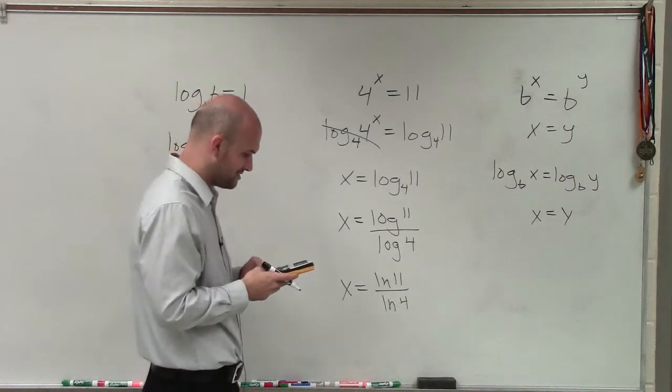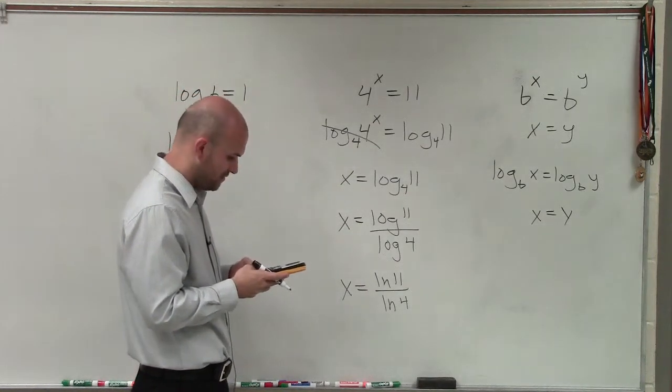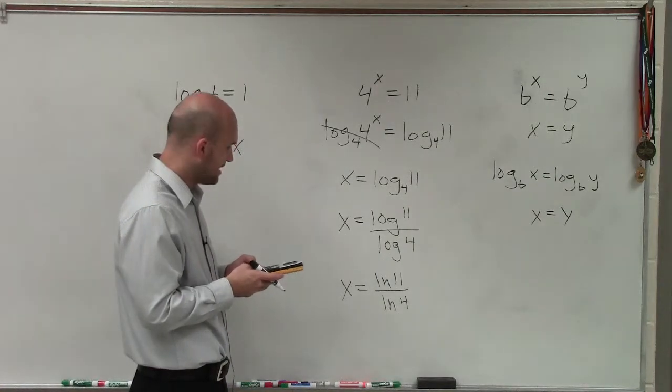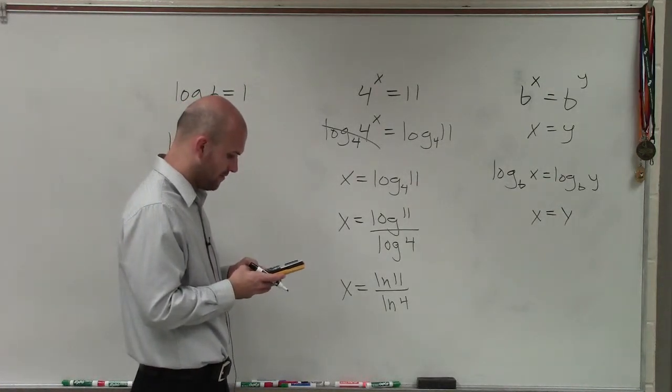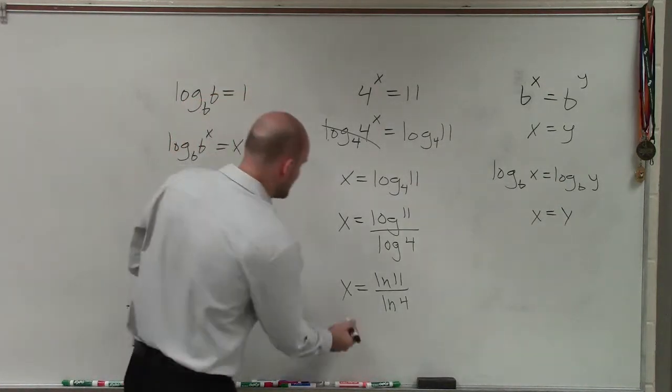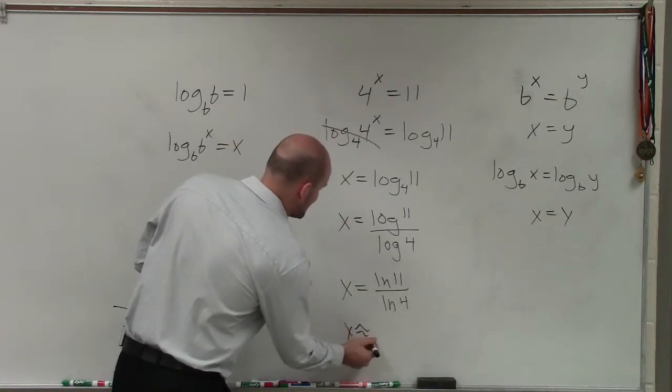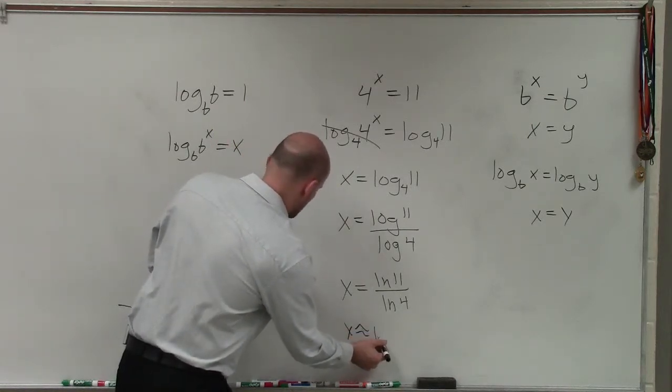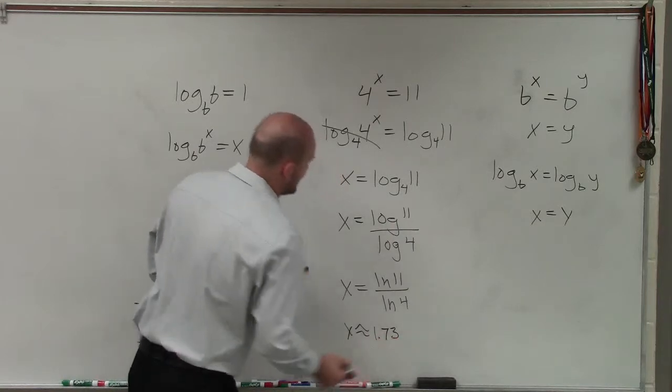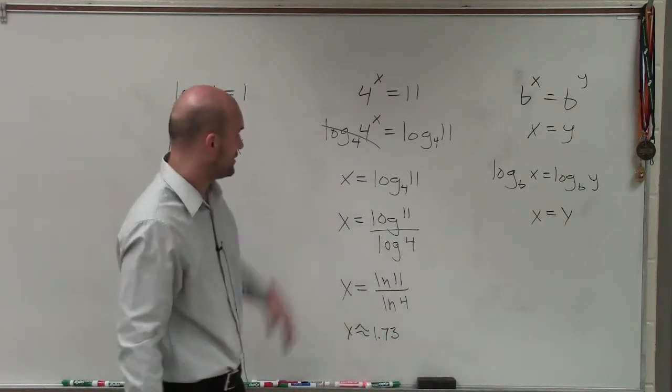So all I'm going to do is take my calculator, and I am just going to now compute log of 11 divided by log of 4. And therefore, that's going to give me x equals approximately 1.73 as I round to the hundredth digit.